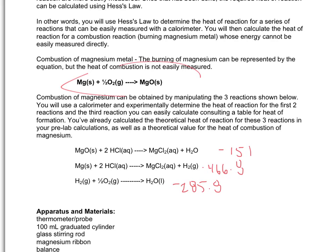And then when we combined them, we actually have to flip the first equation to add these up and get the desired equation. So the theoretical heat of equation for the reaction we're interested in is negative 601.6. And again, I got that by converting this to a positive 151, leaving the other two as negatives, and then summing all three.